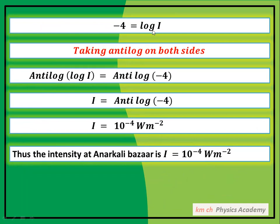اب ہم نے I معلوم کرنا ہے تو log کو ختم کرنا ہے۔ log کو ختم کرنے کا طریقہ یہ ہے کہ دونوں طرف antilog لے لیا جائے۔ antilog(log I) = antilog(−4)، تو antilog اور log cancel ہو جائیں گے اور صرف I رہ جائے گا۔ antilog of −4 یعنی 10⁻⁴، تو I = 10⁻⁴۔